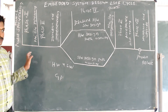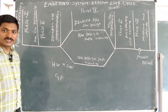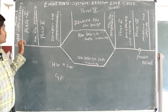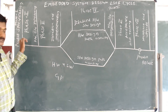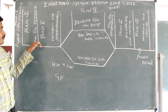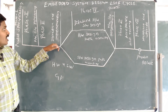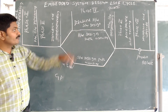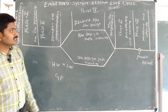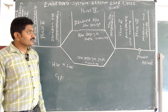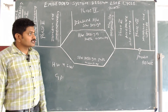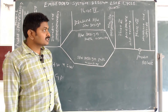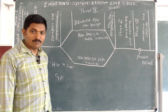Now we are going to see about the Embedded System Design Life Cycle. There are seven phases available. Phase one is product specification, phase two is hardware software partitioning, phase three is iteration and implementation, phase four is detailed hardware software design, phase five is hardware software integration, phase six is acceptance and testing, and phase seven is maintenance and upgrade.